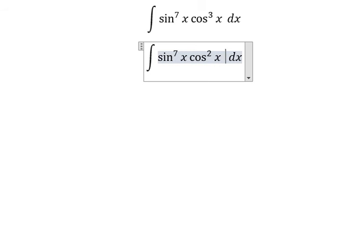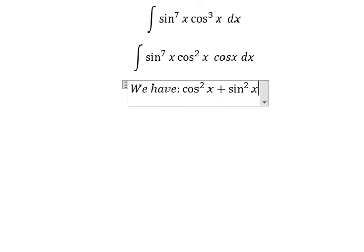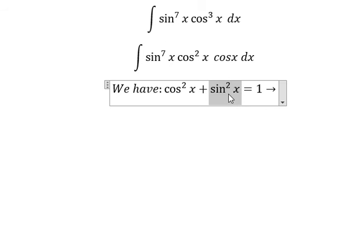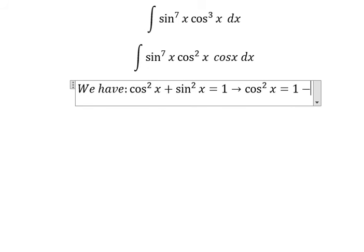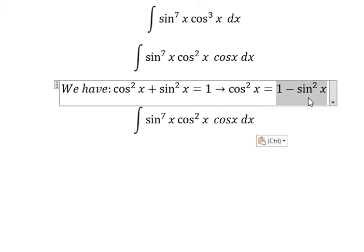We can write cos^3x as cos^2x times cosx. We have the formula cos²x + sin²x = 1. Since we have cos²x here, I will rearrange to get cos²x = 1 - sin²x.